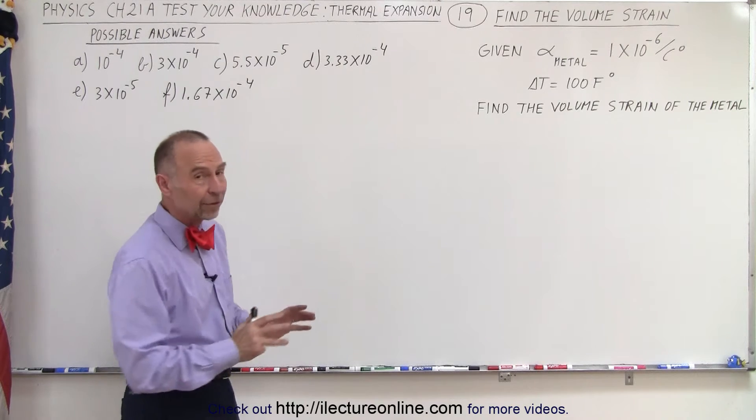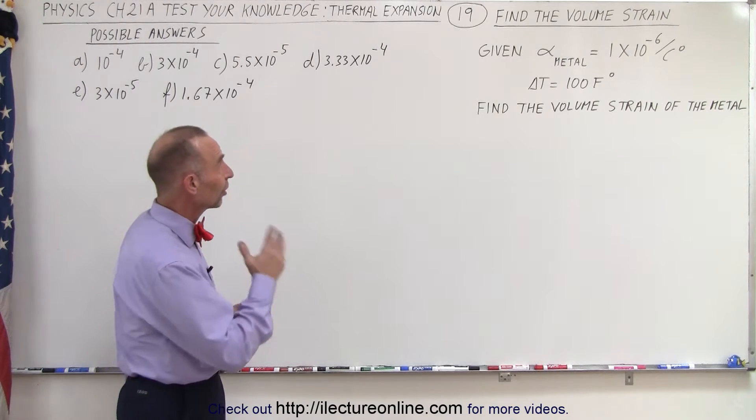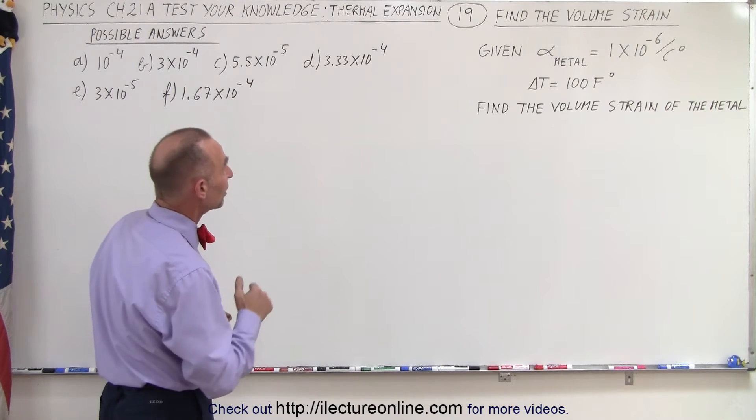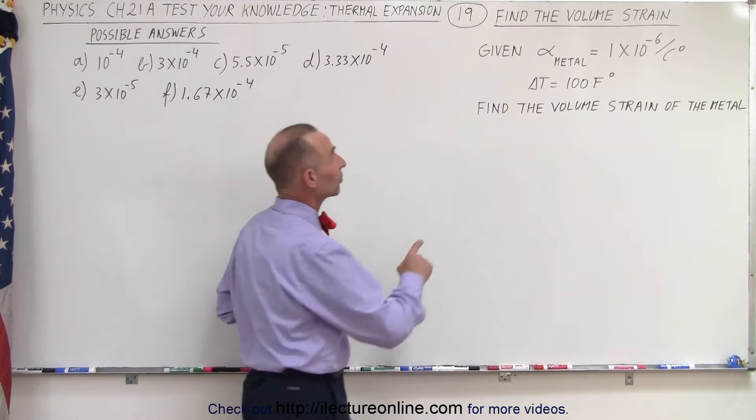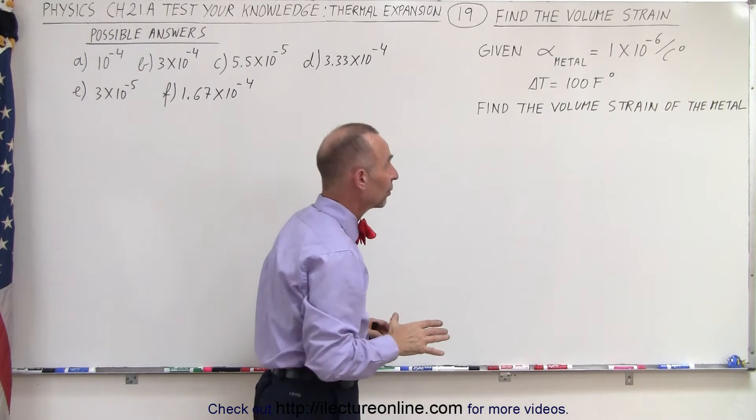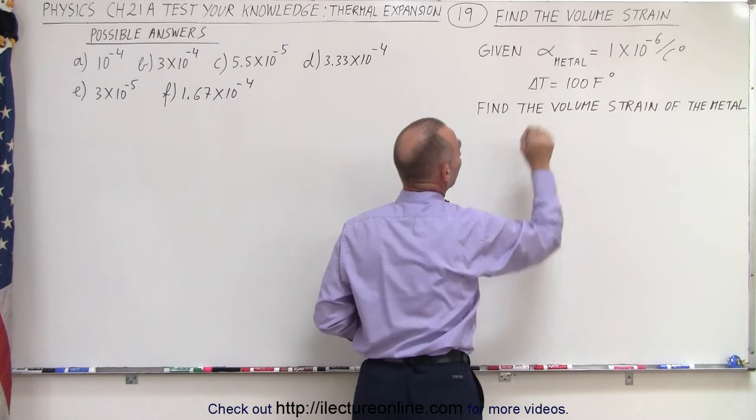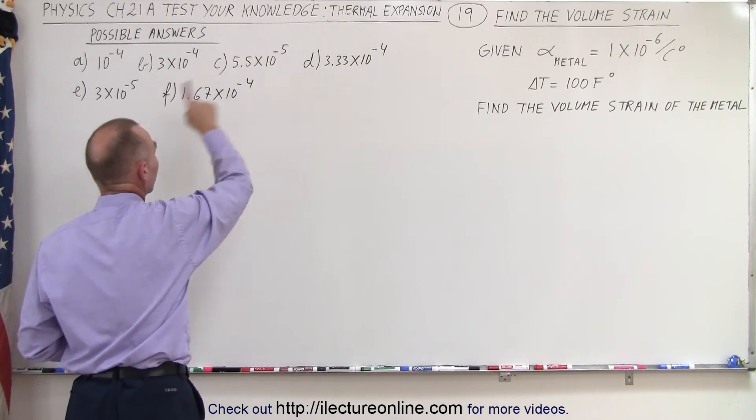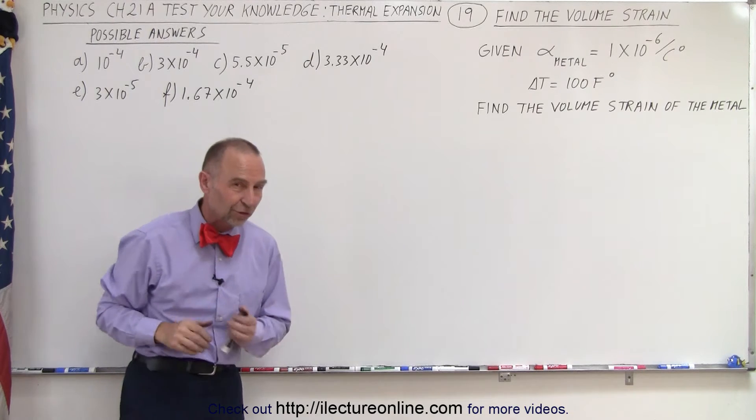Now we're going to try to put it all together with a couple more examples starting with this one. It tells us to find the volume strain of the metal given the following: the linear coefficient of expansion is 1 × 10^-6 per degree, the temperature has been increased by 100 Fahrenheit degrees, and we're given a number of possible answers and only one of those is correct.